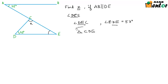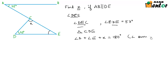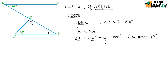So in triangle CDE, angle D plus angle E plus x equals 180 degrees — by the angle sum property. When I know the values of D and E, I can easily find out x. But how do I find the value of angle E? There is another condition given: AB is parallel to DE. Let's see if we can use this.